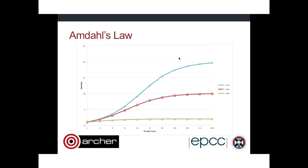This plot shows how Amdahl's Law varies with the number of parallel tasks for different proportions of parallelizable code. The blue curve is 95% parallelizable, the red curve is 90%, and the green curve is about 50%. You can see how quickly speedup tails off as you go from a single core to 1024 cores. The maximum speedup achievable with 95% parallelizable code is less than 20 times. This looks disheartening, but it also shows how much work has gone into production HPC codes to ensure that large fractions of them are parallelizable.